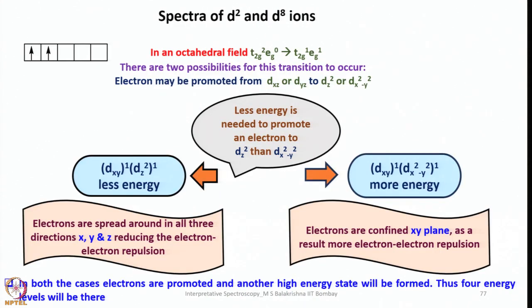Now let us look into the spectra of D² and D⁸ ions to see similarities similar to what we saw in D¹, D⁴, D⁶, and D⁹ systems. In an octahedral field, for the D² system we have t₂g² eg⁰. When an electron is promoted, this changes to t₂g¹ eg¹. There are two possibilities: electrons may be promoted from dxy, dxz, or dyz to dz² or dx²−y².